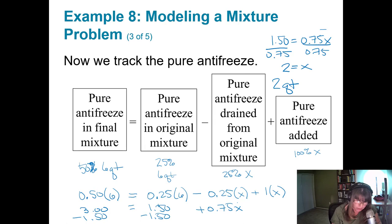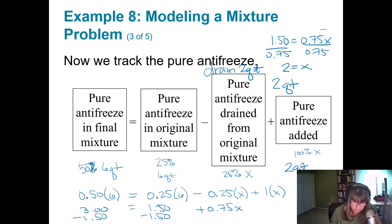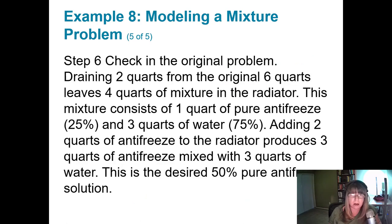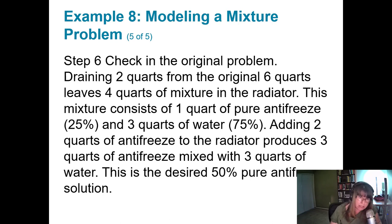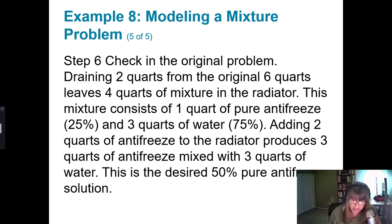So we should drain 2 quarts and put in 2 quarts of pure antifreeze to ultimately get a 50% mixture. Checking: draining 2 quarts from the original 6 quarts leaves 4 quarts of mixture, which contains 1 quart of pure antifreeze and 3 quarts of water (the original 25/75 ratio). Adding 2 quarts of pure antifreeze gives us 3 quarts of antifreeze and 3 quarts of water, which is 50%. That's it for this lecture — until next time!